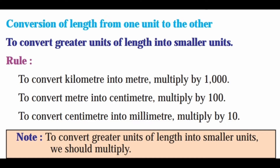Conversion of length from one unit to others. To convert greater units of length into smaller units, the rule is: to convert kilometer into meter, multiply by 1000; to convert meter into centimeter, multiply by 100; to convert centimeter into millimeter, multiply by 10. Note: to convert greater units of length into smaller units, we should multiply.